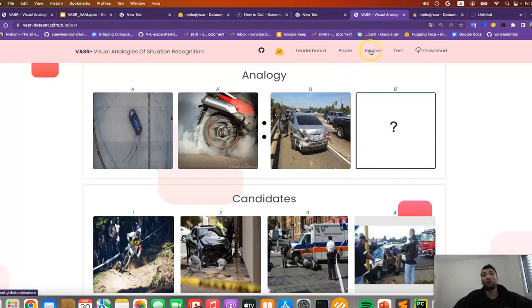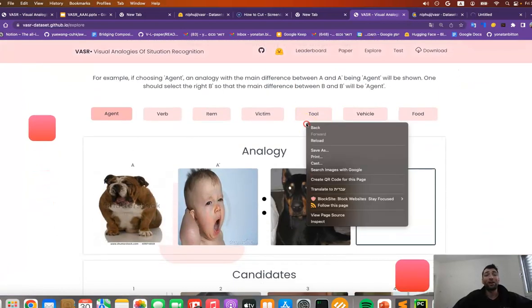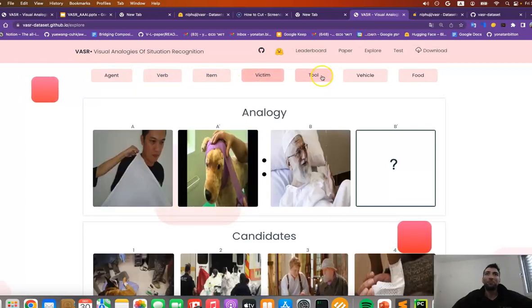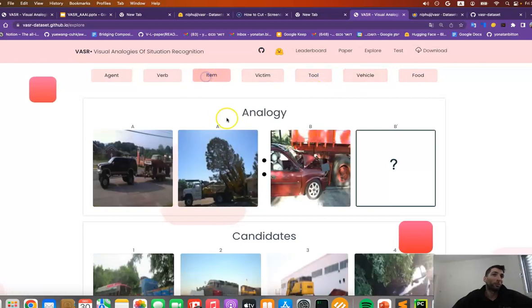And you can also explore different analogies we have in our dataset because we have several categories. We have analogies of where the item change is a verb, victim, tool, vehicle. For example, this one is item.